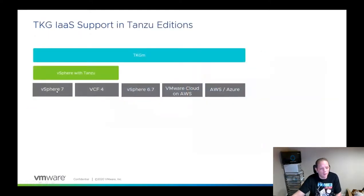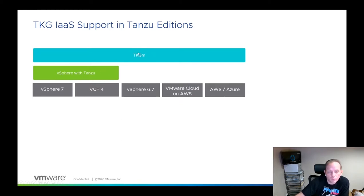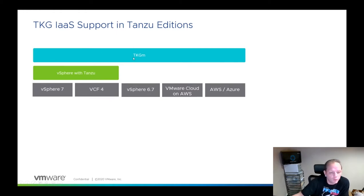vSphere with Tanzu is only available on vSphere 7 platforms. vCloud Foundation 4 includes vSphere 7, so vSphere with Tanzu is available across those platforms. TKGm can also be a fit on a vSphere 7 platform — it is possible and there are supported use cases — however, on vSphere 7 there are strong advantages to using vSphere with Tanzu.